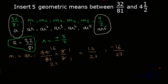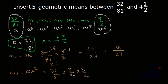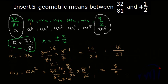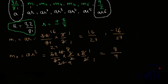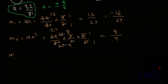M2 = AR² = (32/81) × (3/2) × (3/2). Here 32×9 = 288 and 81×4 = 324, simplifying gives 8/9. Whether r is positive or negative, we get the same result since we are squaring r, so M2 = 8/9.